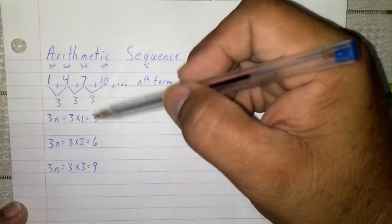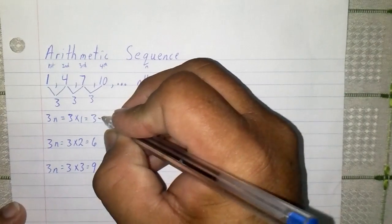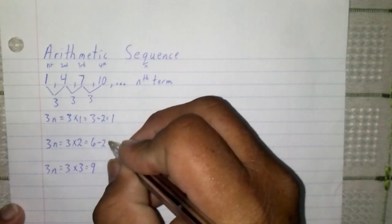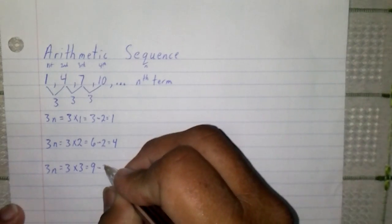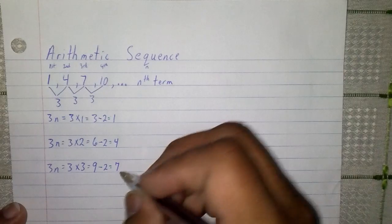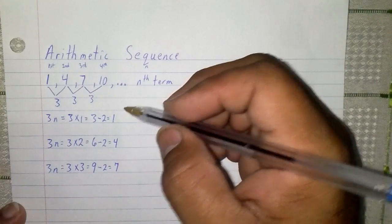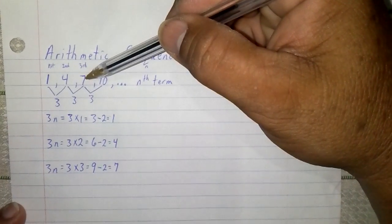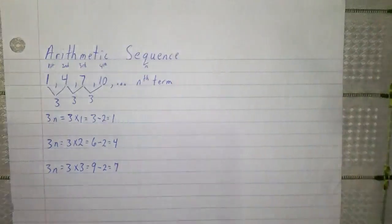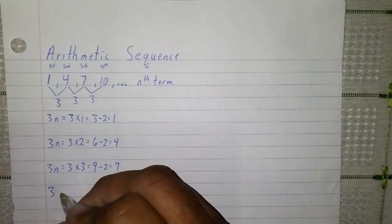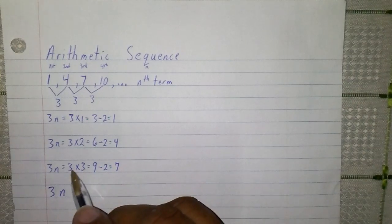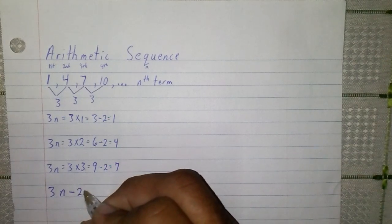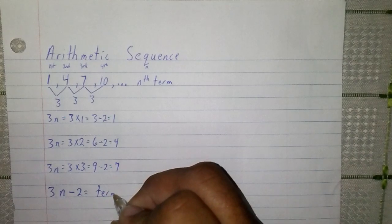So how can we make this 3 become a 1? We subtract 2, and that becomes 1. If we subtract 2 from the 6, it becomes 4. And if we subtract 2 from the 9, it becomes 7. We've now noticed there is a pattern. This pattern is 3n, and whatever we get from that product needs to be subtracted by 2 to give us the term value.